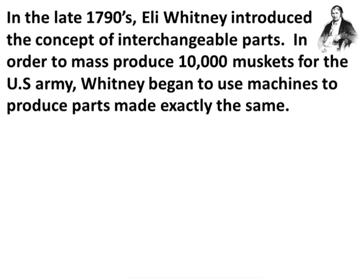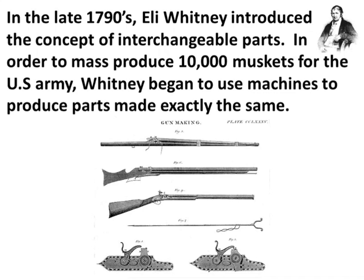In the late 1790s, Eli Whitney introduced the concept of interchangeable parts. In order to mass produce 10,000 muskets for the U.S. Army, Whitney began to use machines to produce parts made exactly the same. Each part of the rifle would be made by a machine and then assembled by workers. What's nice about this process is if one part of the rifle broke — say the trigger — instead of discarding the entire rifle, you would just replace the trigger.